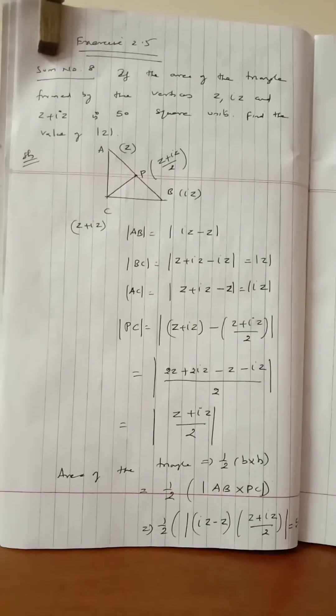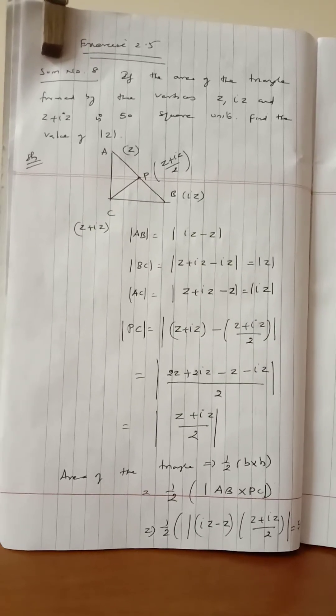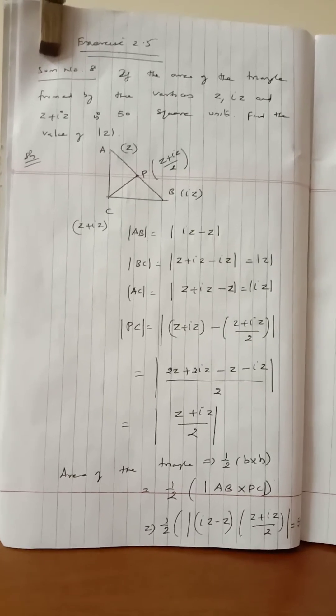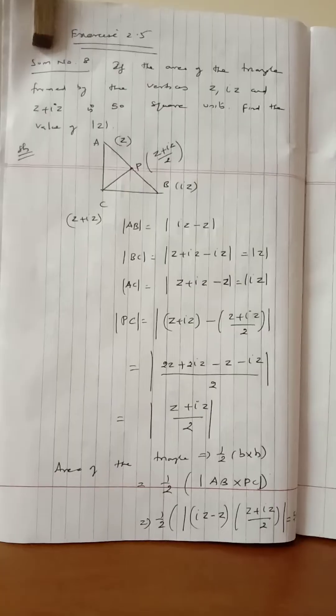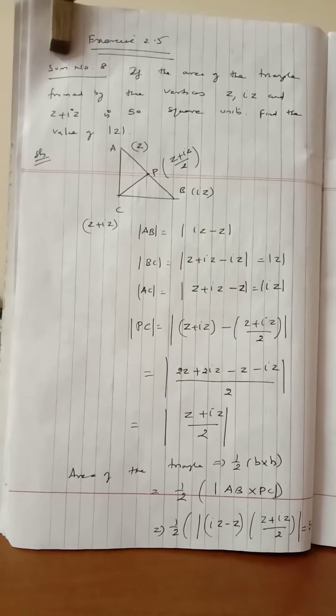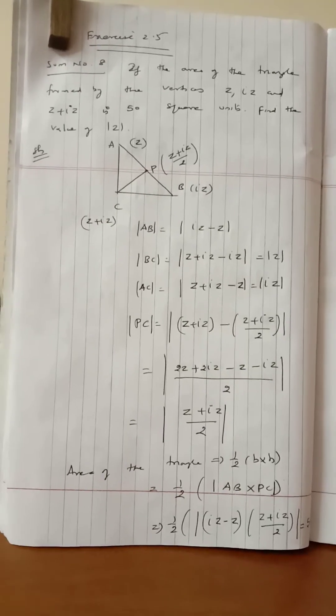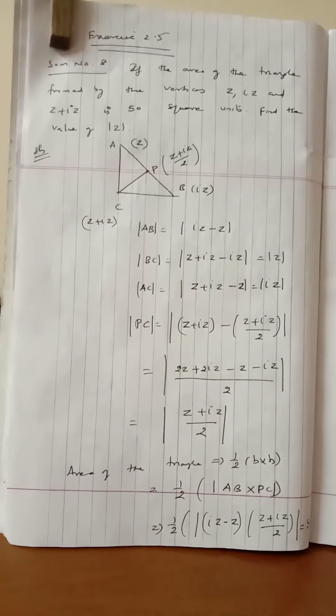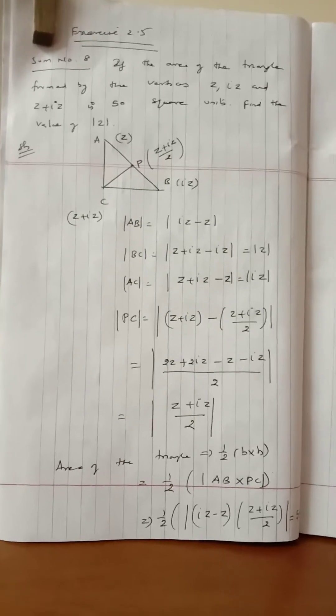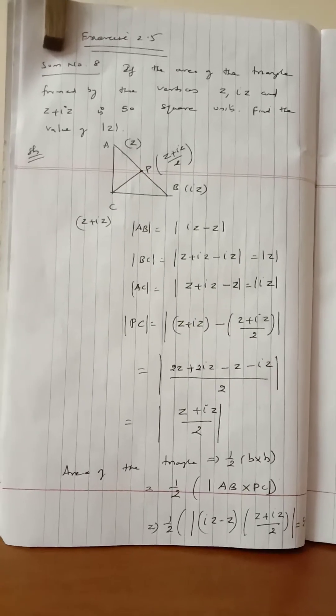The triangle formula is half into breadth into height. Let P be the midpoint of AB. The midpoint formula is to add the two coordinates and divide by 2.